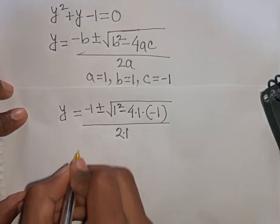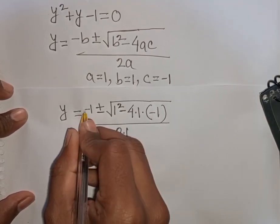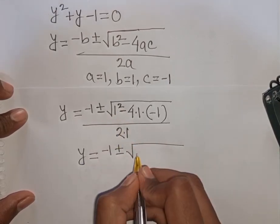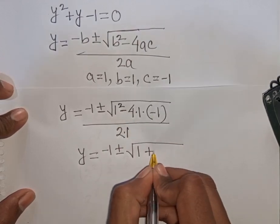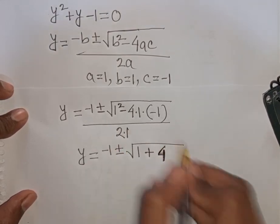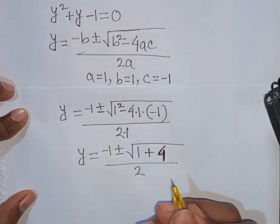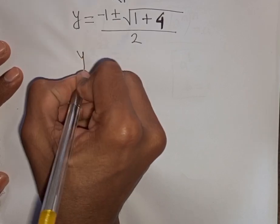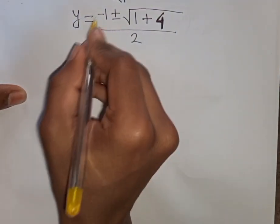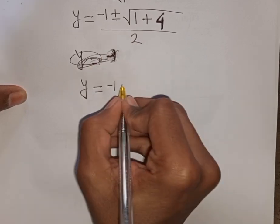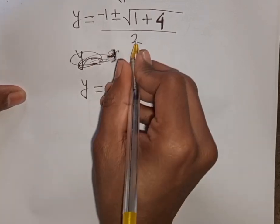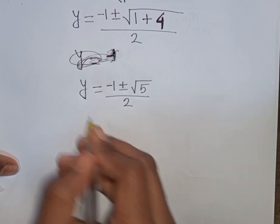So y equals minus 1 plus or minus square root of 1 plus 4, which is 5, divided by 2. This gives two cases: y equals (minus 1 plus square root of 5) divided by 2, or y equals (minus 1 minus square root of 5) divided by 2.